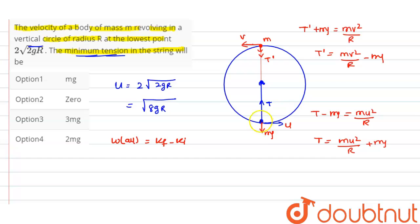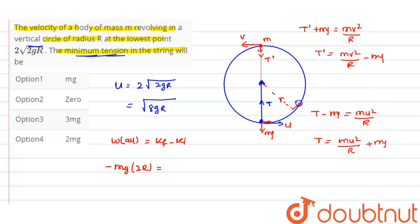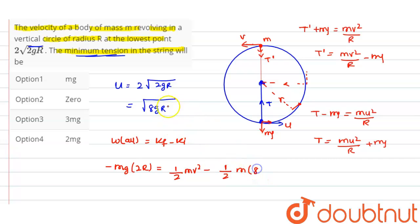The work done by gravity is negative because force acts downward while displacement is upward, so it equals −mg(2r). The work done by tension is zero because tension is always perpendicular to displacement throughout the circular motion. So: −mg(2r) = ½mv² − ½mu².